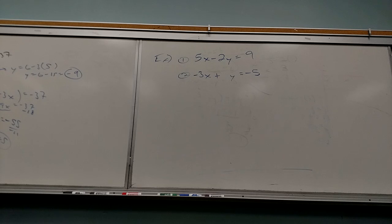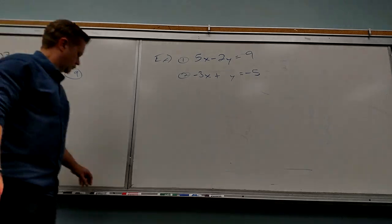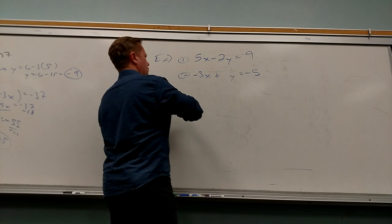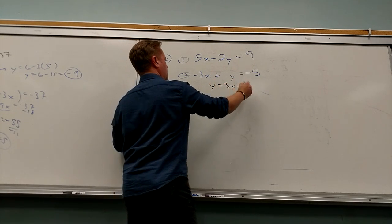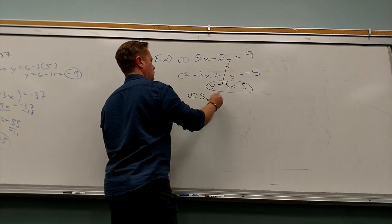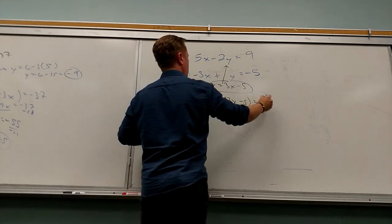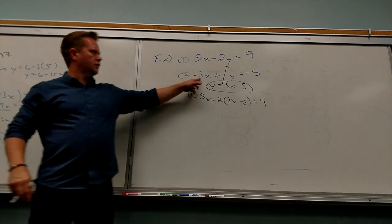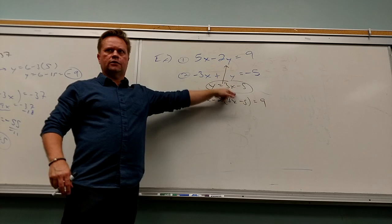So to solve for Y in the second equation — it's negative 3x plus 1 — I'm going to add 3x. So Y equals 3x plus 1. And then I can use this in the first equation — take this and replace Y with it, because that's what Y is.